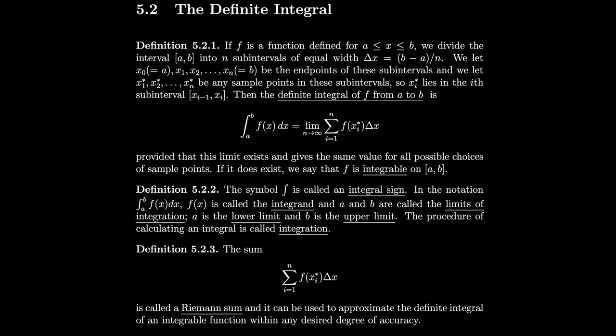Then the definite integral of f from a to b is the integral from a to b of f of x dx, and it is defined as the limit as n goes to infinity of the sum from i equals 1 to n of f of xi star delta x, provided that this limit exists and gives the same value for all possible choices of sample points.